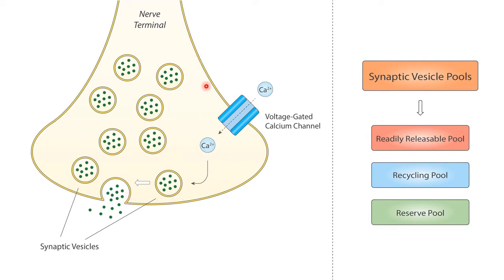And this happens because an action potential reaches the nerve terminal and then voltage-gated calcium channels open and calcium enters the cell. So this causes synaptic vesicles to fuse with the membrane, and as such neurotransmitters inside them are released and then act on a post-synaptic cell.